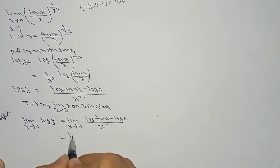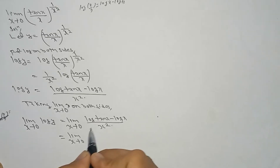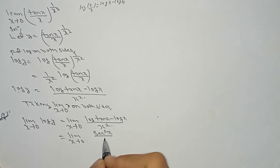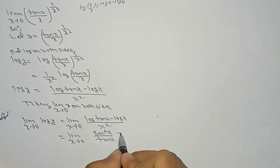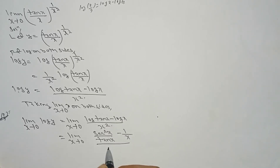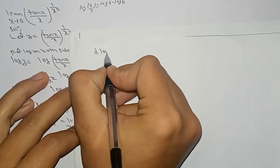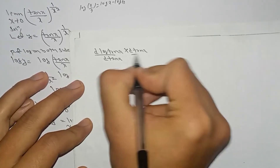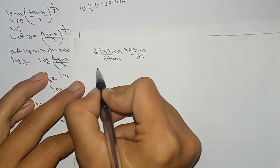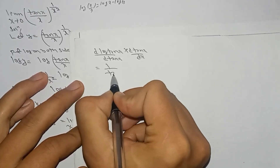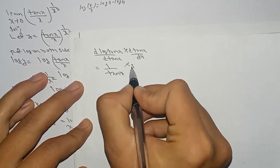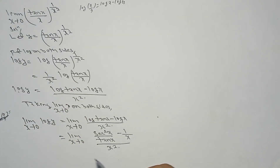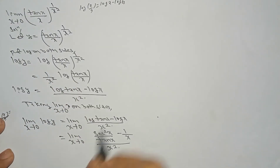Now we perform the derivative — L'Hôpital's rule. The derivative of log tan x is sec²x / tan x, and the derivative of log x is 1/x. The derivative of the denominator x² is 2x. So the derivative of log tan x is (1/tan x) · sec²x, giving sec²x / tan x.